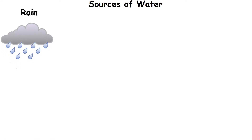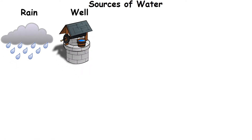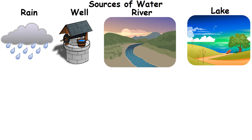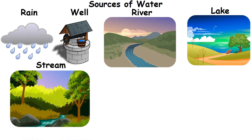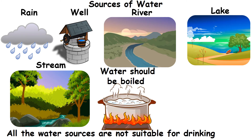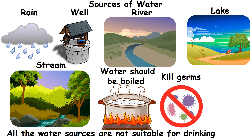Some sources of water are rain, well, river, lake, and stream. All water sources are not suitable for drinking. Water should be boiled to kill the germs in it, and only then it is suitable for drinking.